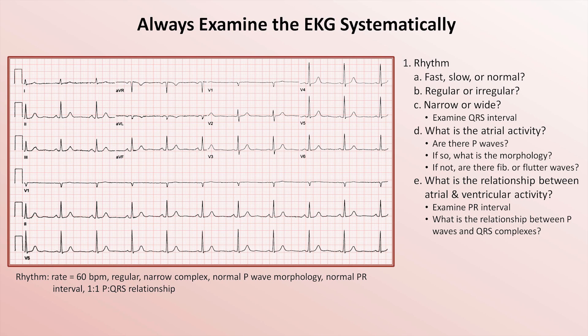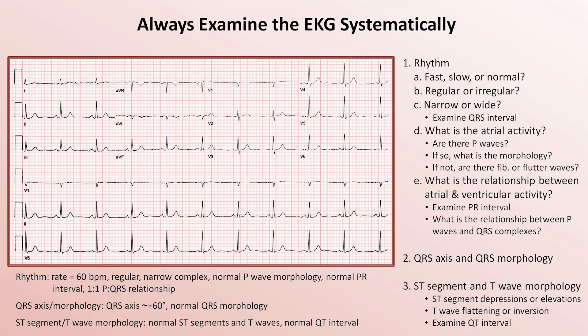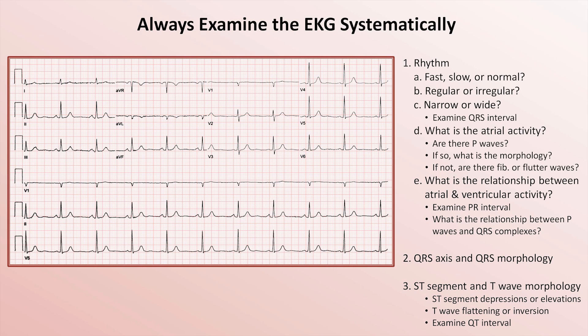The next step in the systematic method is examination of the QRS axis and morphology. The axis is about positive 60 here and the morphology is normal. The final step is examination of the ST segment and T-wave morphology, which also includes assessment of the QT interval. All of those are normal. So if one were to synthesize these findings into a unified impression of the EKG, one would say that it was a normal study.